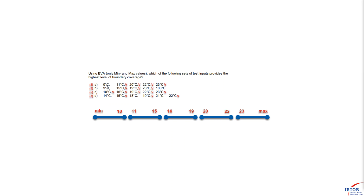For example, answer A: 0 is not a boundary value, 11 is, and 20, 22, 23 are also boundary values — giving four boundary values. We don't count 0 because we can't confirm the min value from the description. Going through answers B, C, and D the same way, answer C covers five boundary values. Since we have eight boundaries total, the answer covering the most is correct — in our case, it is C.